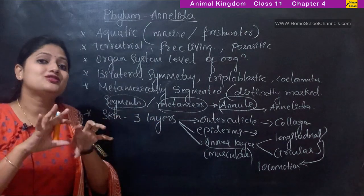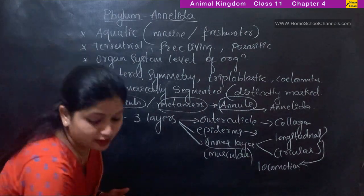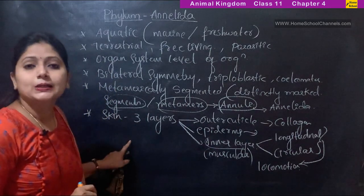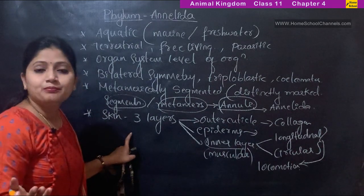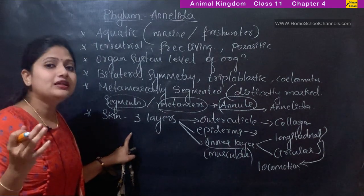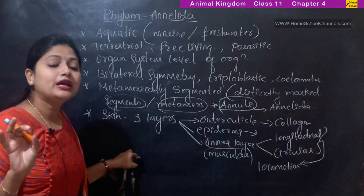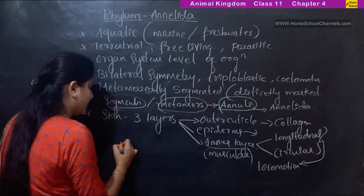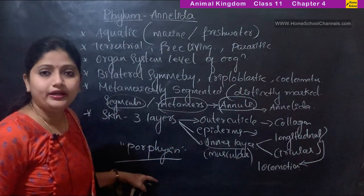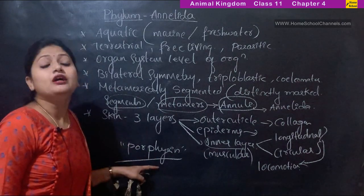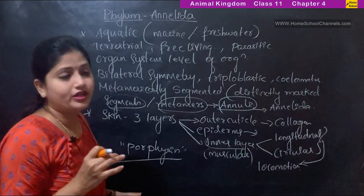That covers the external features of Annelida members. One more thing: the skin is usually brown in color in Annelida members — for example, leeches and earthworms are all brown. This brown color is mainly due to the presence of a pigment called porphyrin.